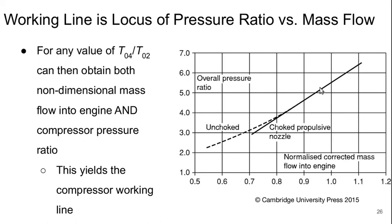The working line of the compressor is simply the locus of pressure ratio versus mass flow points. For any value of T04 over T02, we can get both the non-dimensional mass flow into the engine and the compressor pressure ratio, and combining those two yields points on the compressor working line. We see that here for our engine: as we reduce the overall pressure ratio, the mass flow comes down. If we account for the unchoking of the nozzle, we get a deviation from this straight-line behavior.